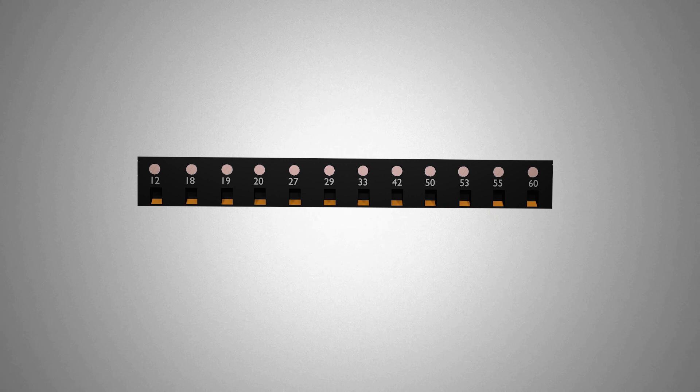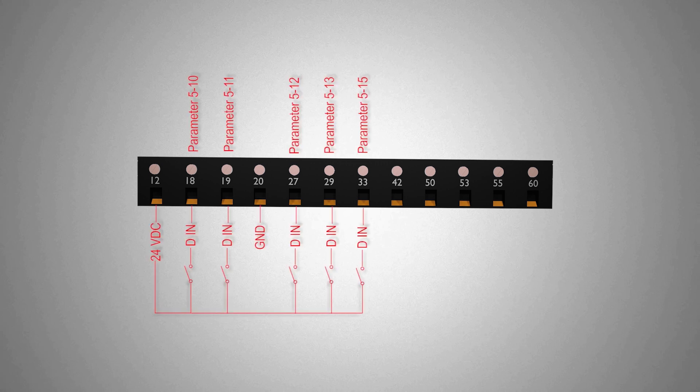The terminals on this strip have a specific number and parameter assigned to it to configure the functions for these IO terminals. The terminal 12 and terminal 20 are supplying out 24V DC for the IO devices.